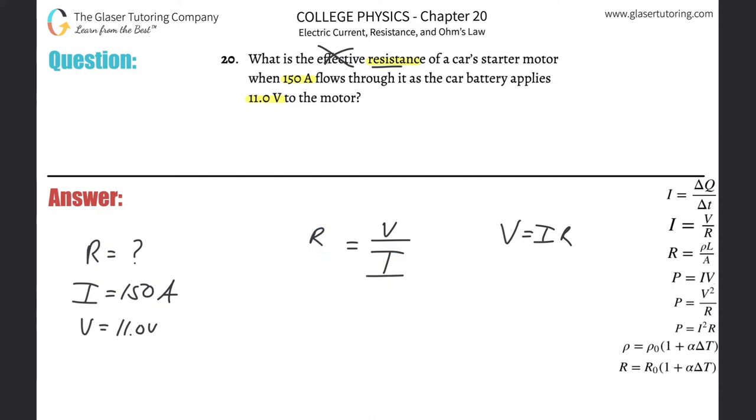The V value, the voltage, is 11. The current is 150. And literally, voila! Let's do it: 11 divided by 150.